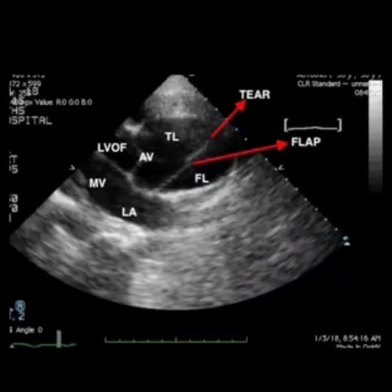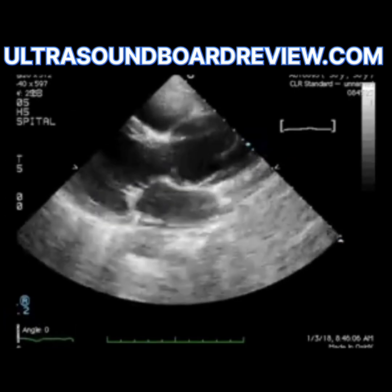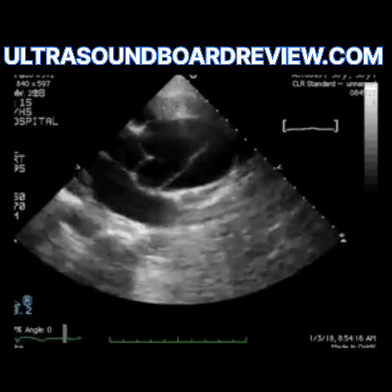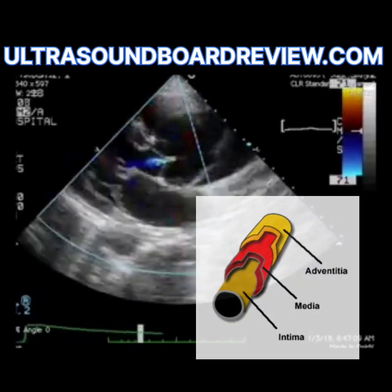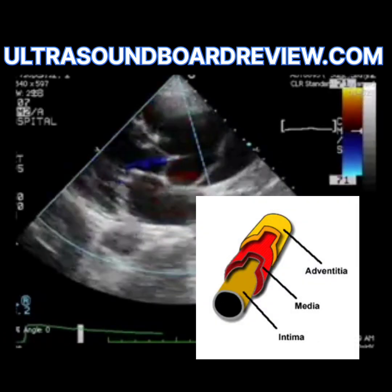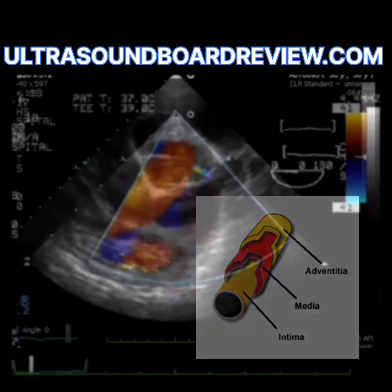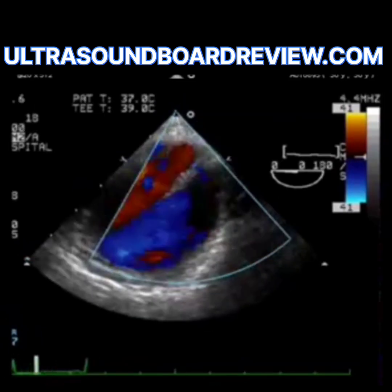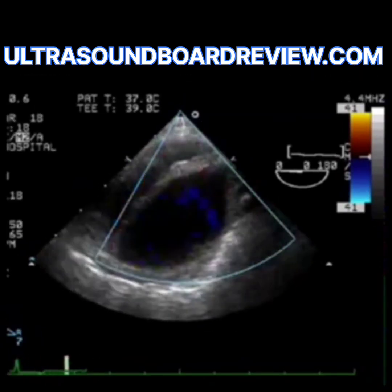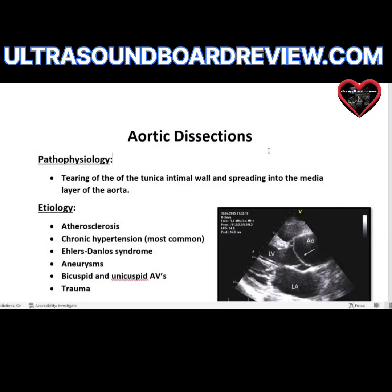Dissections are a tear of the intimal lining in your arterial wall. The wall gets so weak that the intimal inner lining will tear and blood will pool into the medial intima, or the tunica media of the arterial wall, which is between the tunica intima and the tunica adventitia.